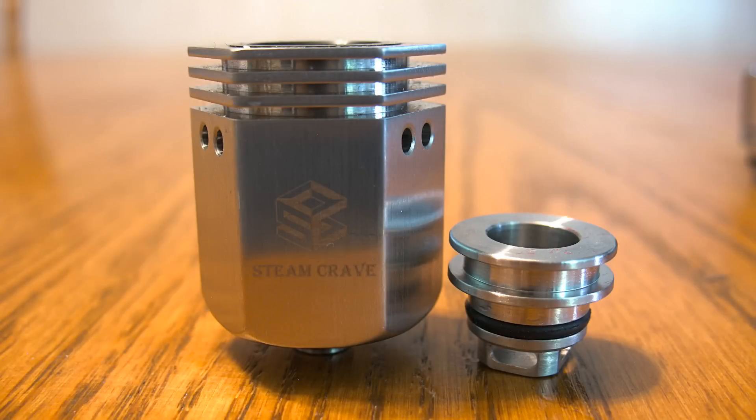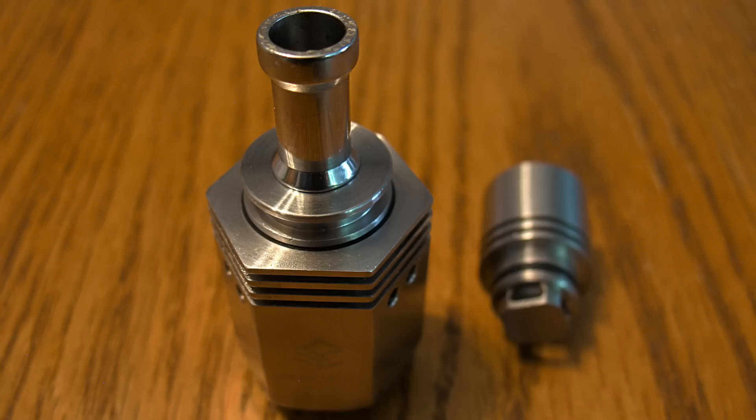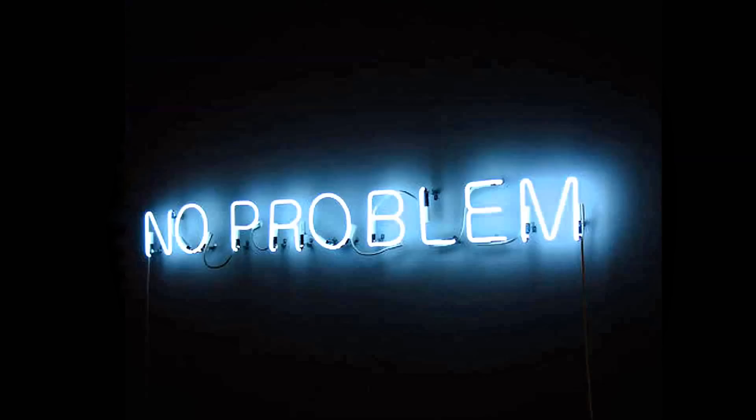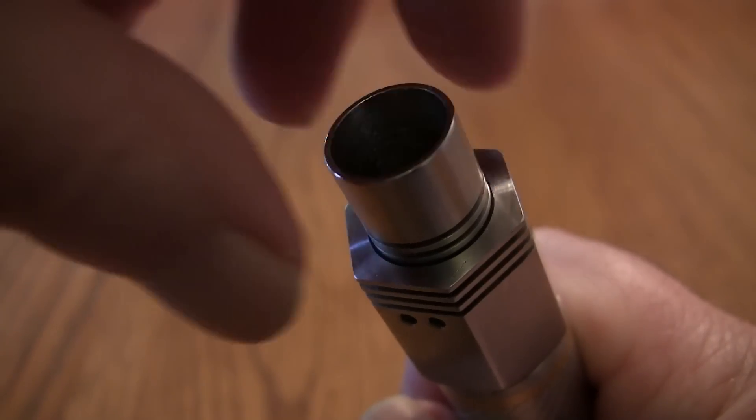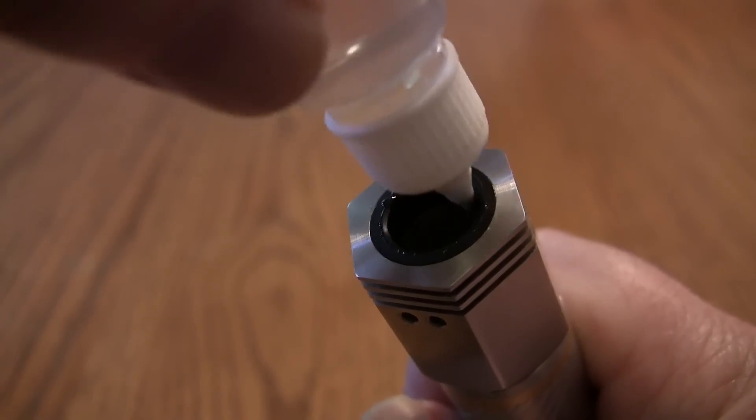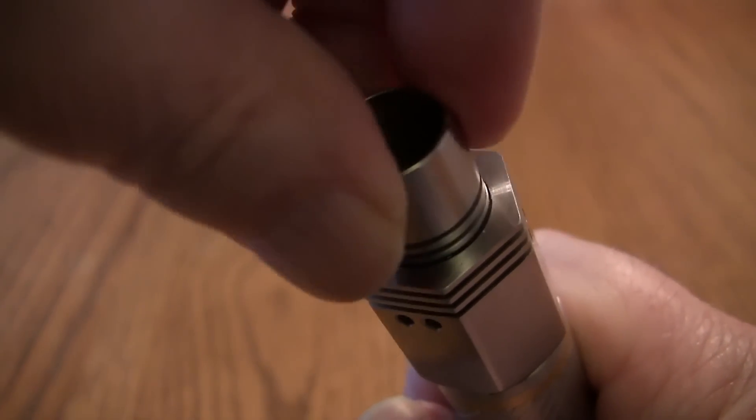Want to use your favorite drip tip on the Aromamizer? Here's the adapter. And if you're a constant over-dripper like I am, no problem. It's so easy. Pull off the drip tip, squirt in your favorite flavor of juice, drip tip back on, good to go.